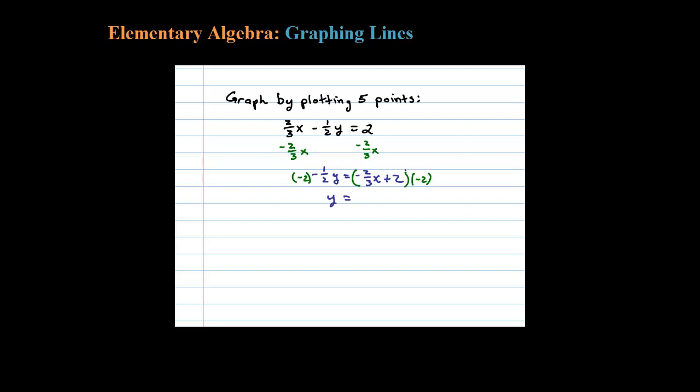Negative two times negative two-thirds is four-thirds X, and negative two times positive two is minus four. So Y equals four-thirds X minus four. This is what I'm going to use to make my chart of values.